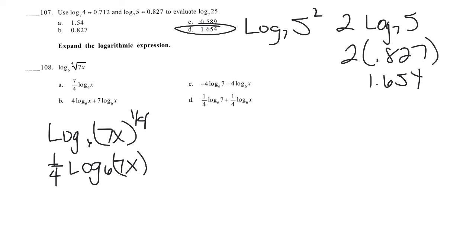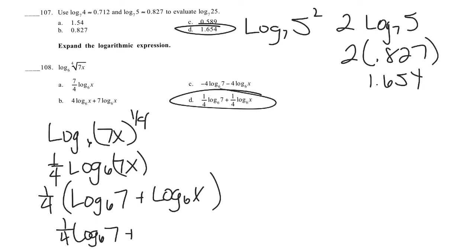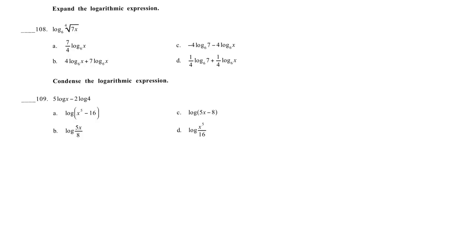And then our product property says that can be the log base 6 of 7 plus the log base 6 of x, but these are in parentheses with the 1/4 in front, so it's 1/4 log 6 of 7 plus 1/4 log 6 of x. That distributes.